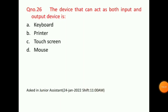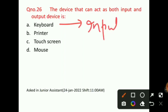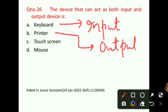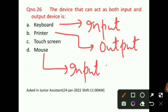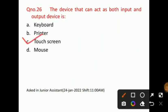Question number 26: The device that can act as both input and output device is called — keyboard is specifically an input device. Printer is specifically an output device. Mouse is specifically an input device. So the correct answer for question number 26 will be option C, that is, touch screen. A touch screen acts as both an input and output device. This question was asked in a junior assistant shift.